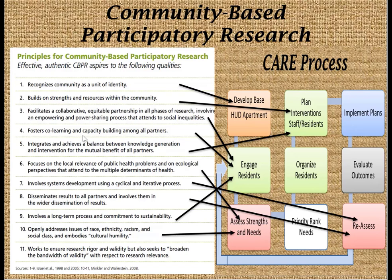Four, fostering co-learning and capacity building among all partners — this involves both the students in the community, the faculties, and the residents of the neighborhoods involved in the change process. Five, integrating and achieving a balance between knowledge generation and intervention for mutual benefit of all partners — this would be involved in the planning phase with residents' input as well as students, faculty, and community partners. Six, focuses on local relevance of public health problems and on ecological perspectives that attend to multiple determinants of health.